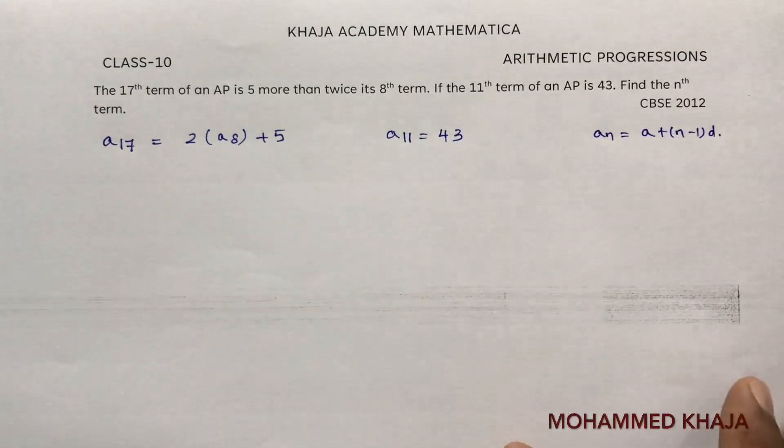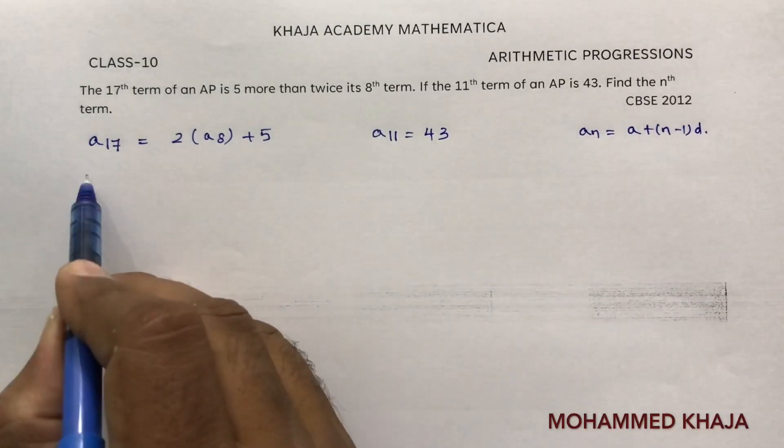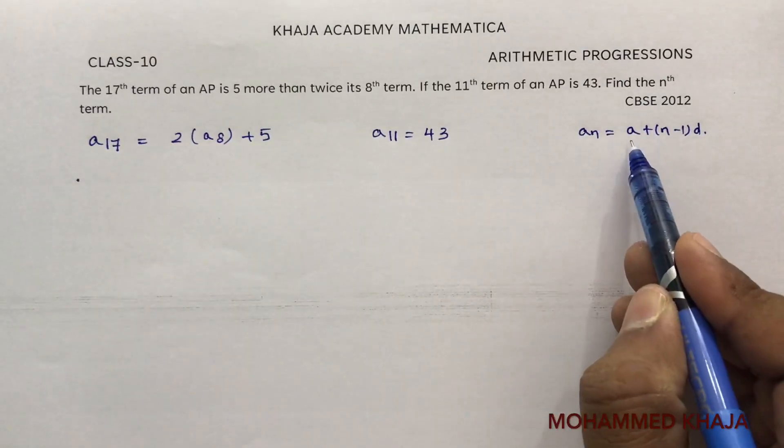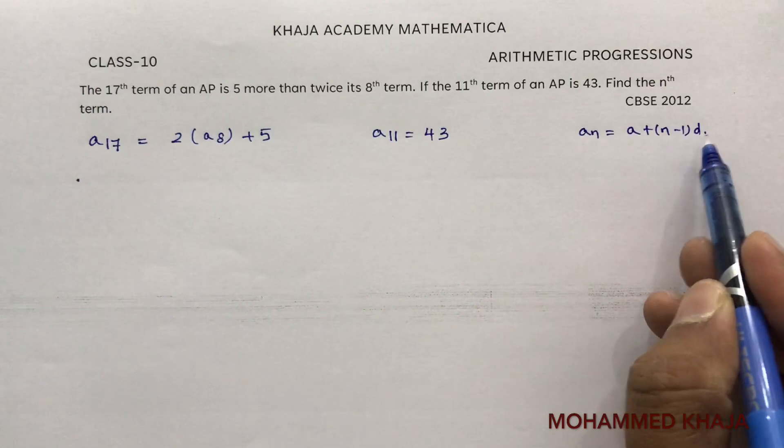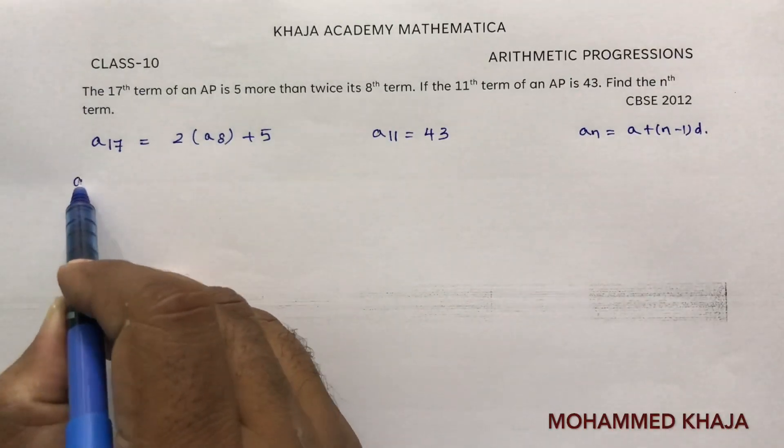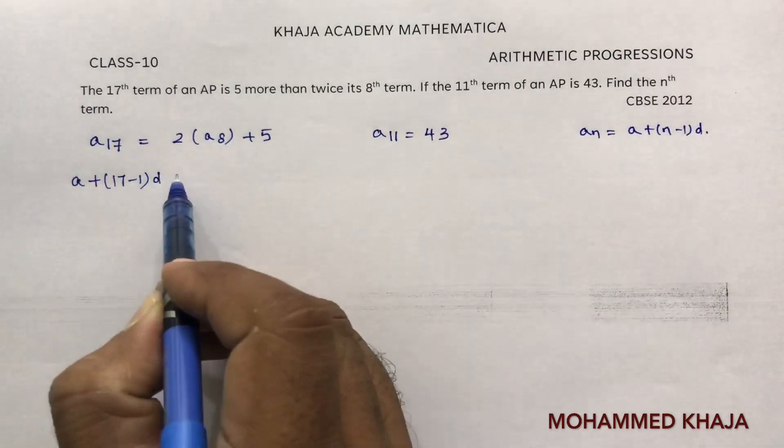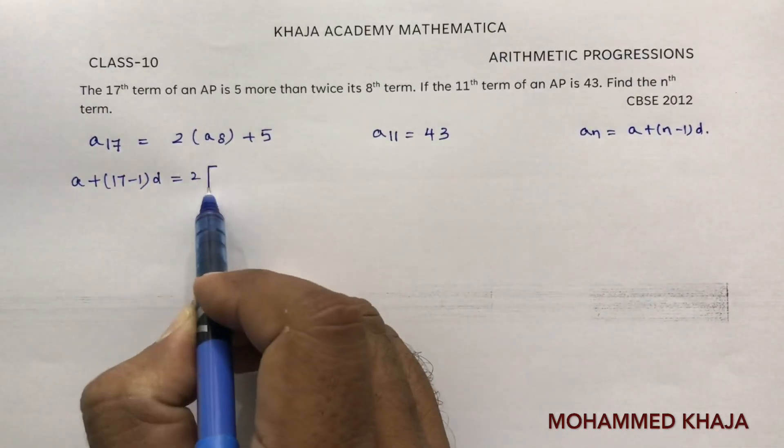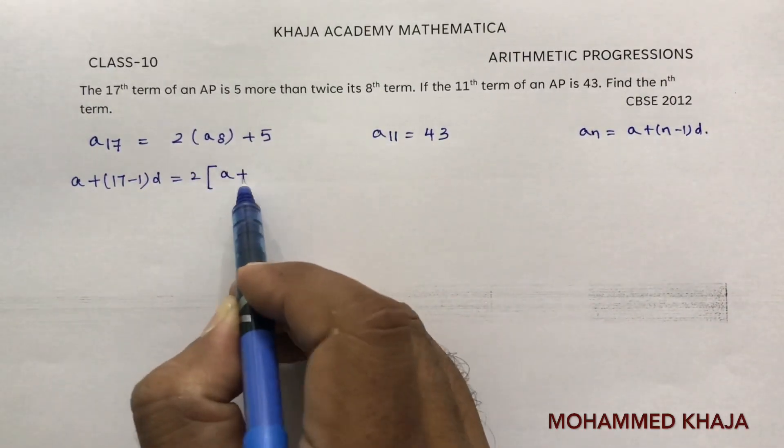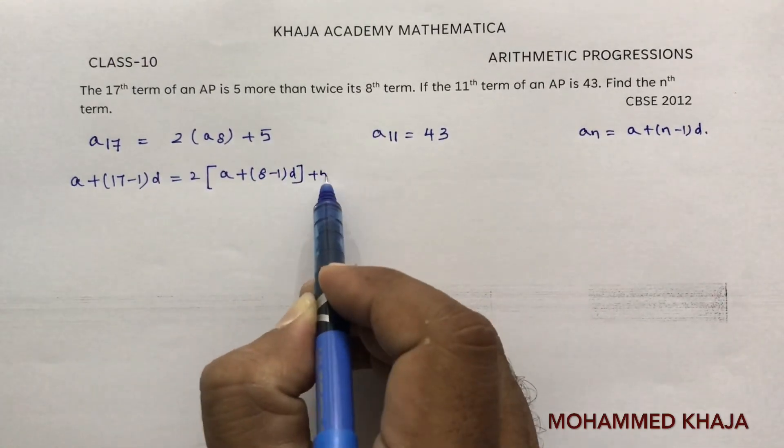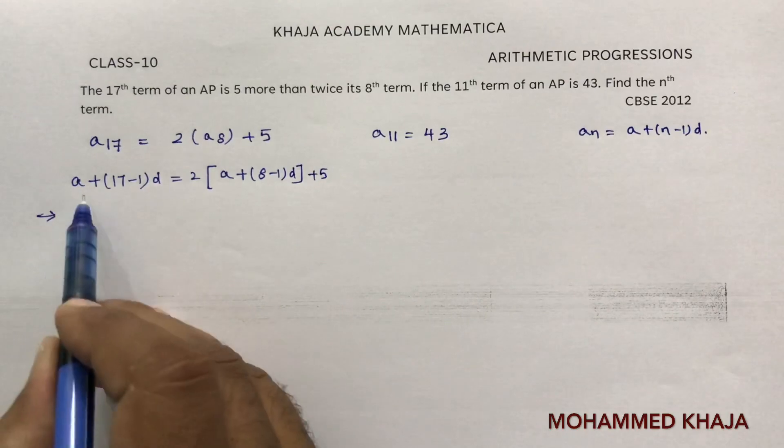Now here 17th term, if I apply here, a17 is a plus 16d, or a plus 17 minus 1 into d equals twice 8th term.